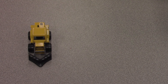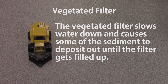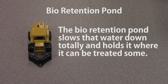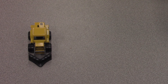So let's review our three BMPs. The vegetative filters slow water down and cause some of the sediment to deposit out, until the filter gets filled up. The stormwater pond would slow the water down, filter some of it out, and remove a lot of the pollutants. And the bioretention pond slows the water down totally and holds it where it can be treated to some respect. With that, this is Dr. Gary Hawkins with University of Georgia and UGA Extension. Thanks.